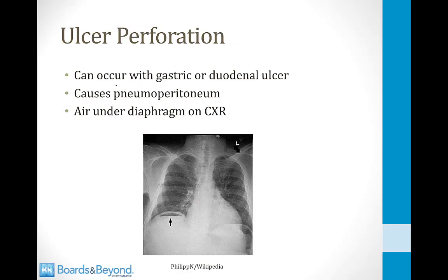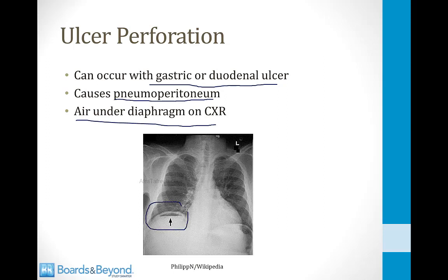Any duodenal ulcer can potentially perforate, and this can occur with gastric ulcers as well. Perforation classically causes pneumoperitoneum — air in the peritoneum — which appears as air under the diaphragm on chest X-ray. If you see a black space under the diaphragm on chest X-ray, this is evidence of something perforated in the abdomen, which can be seen in patients with perforation of ulcers.